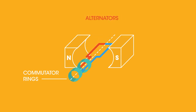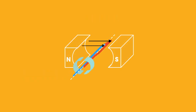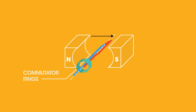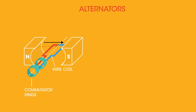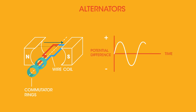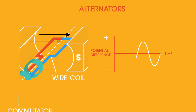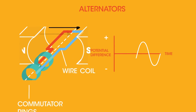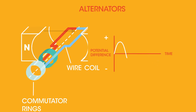This is an alternator, because the wire coil is connected to commutator rings that are complete. Whereas here there is one split ring commutator — this is a dynamo, and so it induces a direct current. It's important to see that this part of the wire coil always connects to the first commutator, and this part always connects to the second commutator.